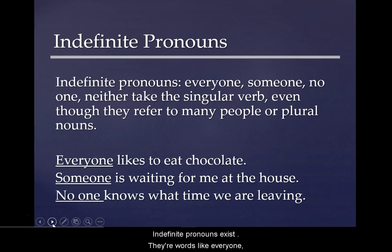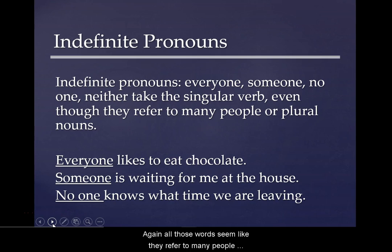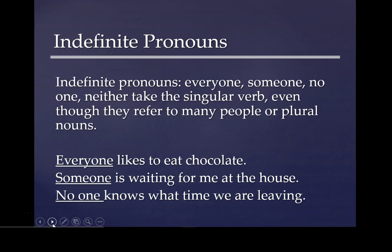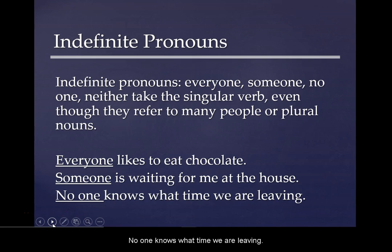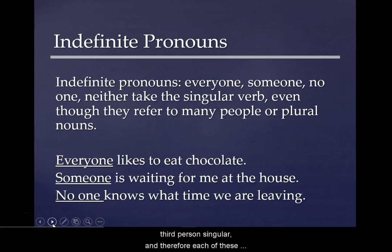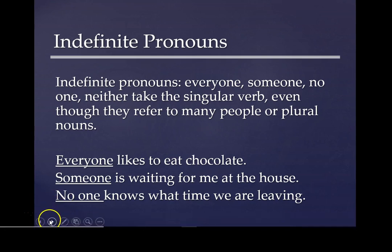Indefinite pronouns such as everyone, someone, no one, and neither — although they seem to refer to many people or plural nouns — take a singular verb. For example: 'Everyone likes to eat chocolate.' 'Someone is waiting for me at the house.' 'No one knows what time we are leaving.' In these three examples, the indefinite pronoun is third person singular, and therefore each verb — likes, is, knows — has to have an S. And this is the end of the lecture on subject-verb agreement.